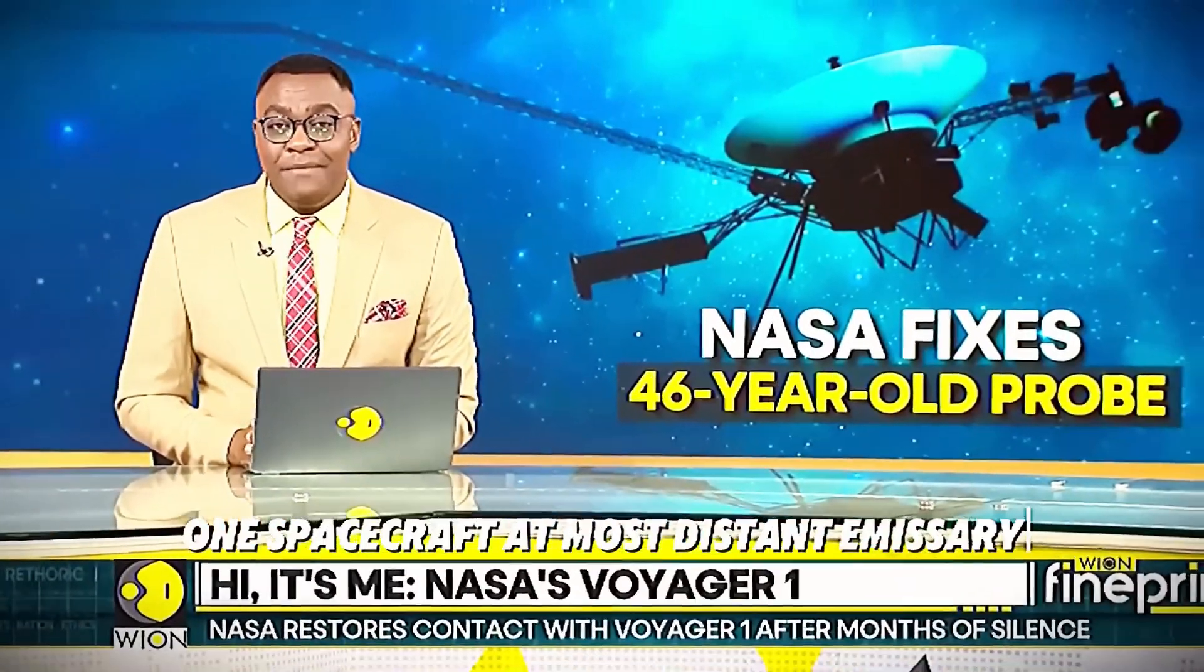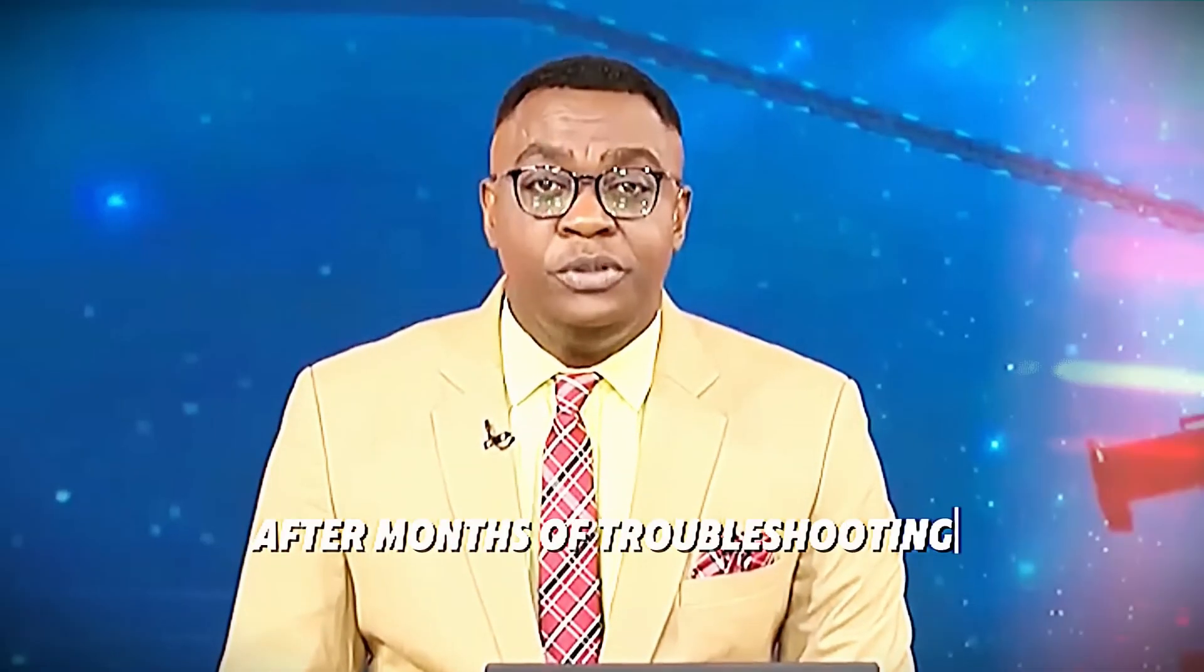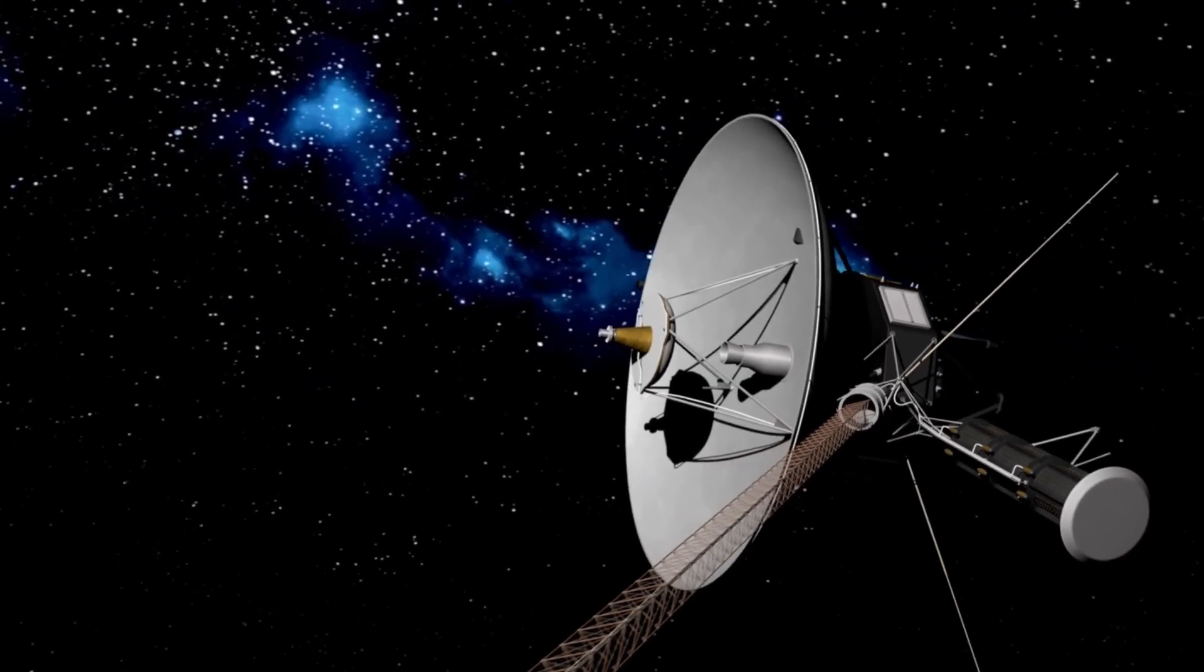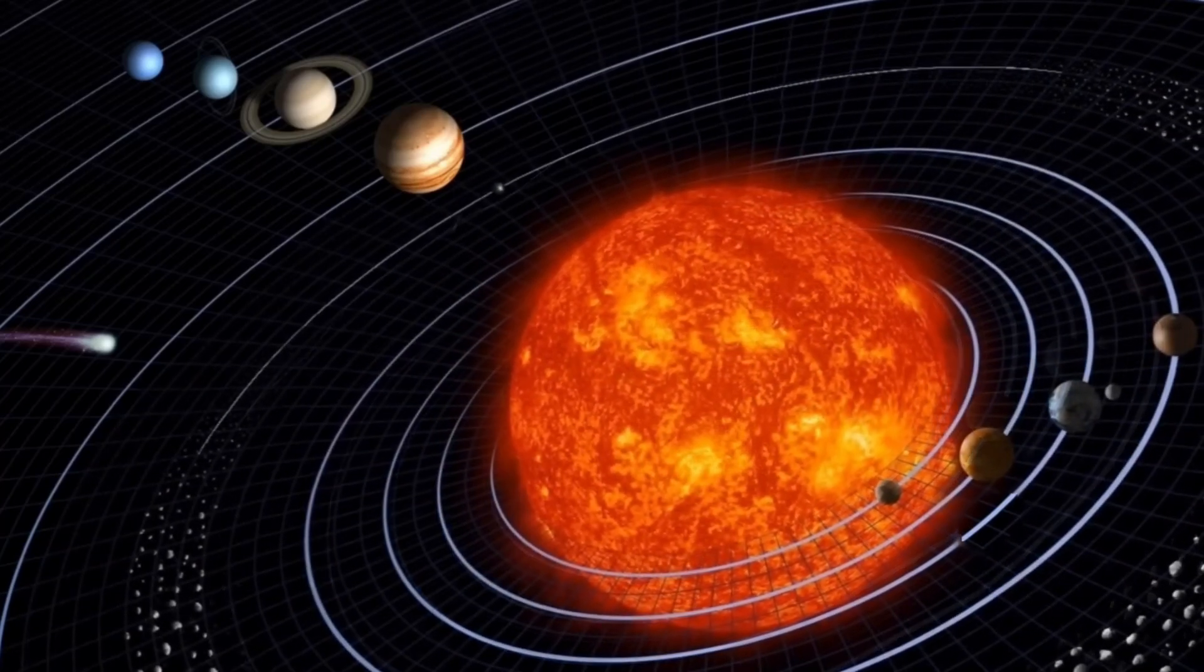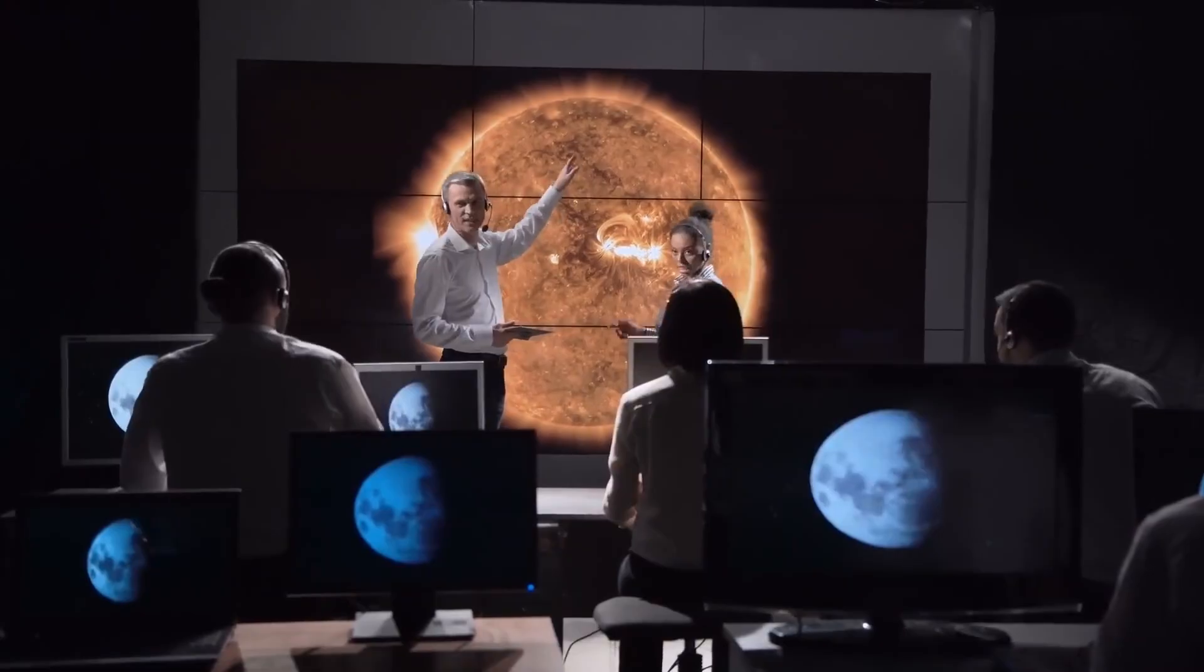But what exactly happened as the Voyager spacecraft crossed the edge of the solar system? Could we truly be trapped in a massive space bubble? And how does this discovery reshape our understanding of the solar system's dynamics?